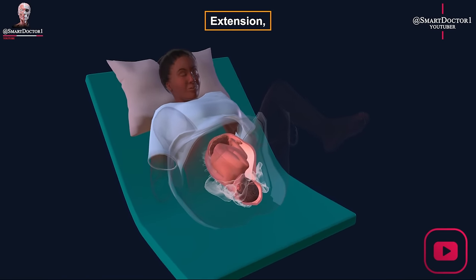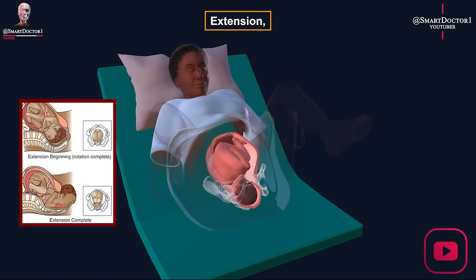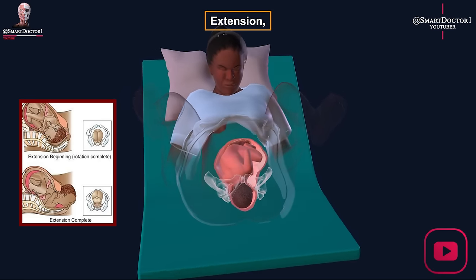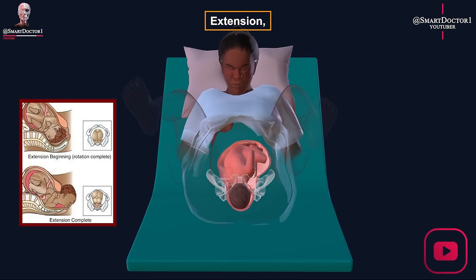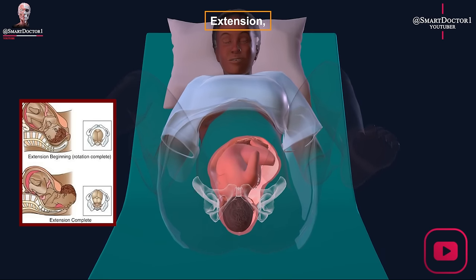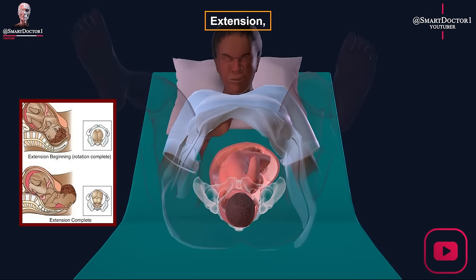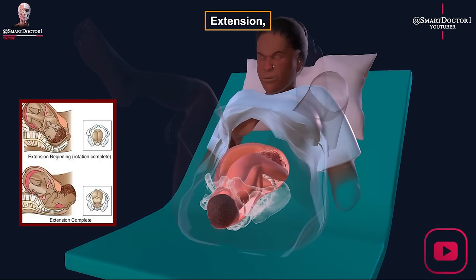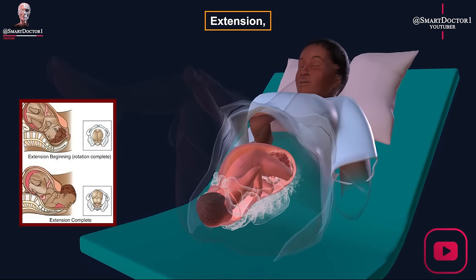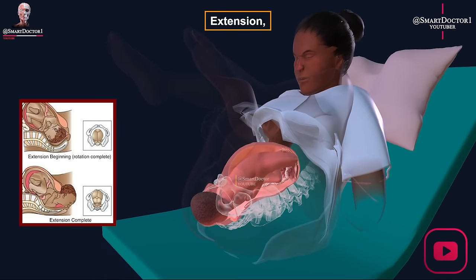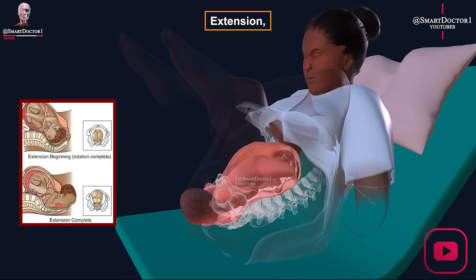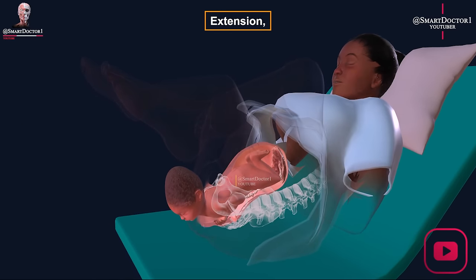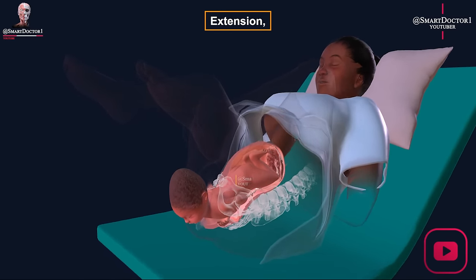Extension is the fifth stage of the cardinal movements of labor, during which the fetal head lifts and the neck extends backward as the widest part of the head passes through the narrowest part of the birth canal. This is due to the force exerted by the mother pushing and the pressure on the fetal head and neck from the pubic symphysis.